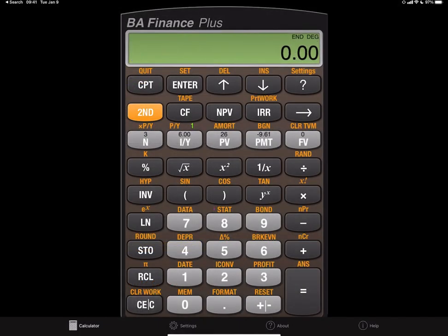Remember, we want to use our second function data and second function stat functions in our calculator. So if we go second function data that allows us to input, we want to make sure that we clear out all previous variables. So go second function clear work, and you should have x01.